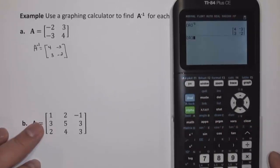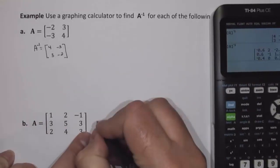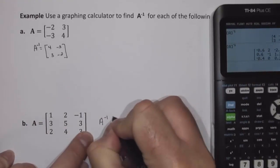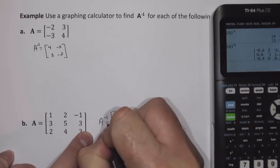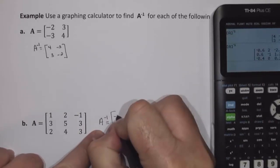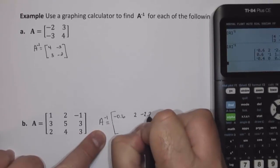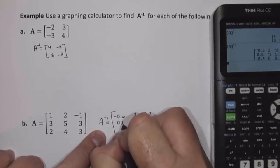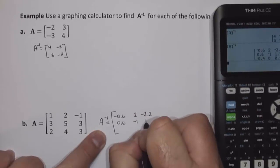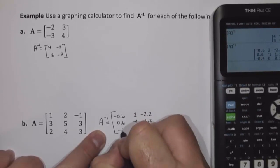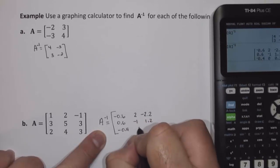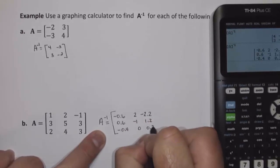If I go to Matrix, select Matrix A, and then use the inverse or reciprocal button, I get this result, which is in decimal form. So A inverse is the 3x3 matrix: negative 0.6, 2, negative 2.2, 0.6, negative 1, 1.2, negative 0.4, 0, 0.2.